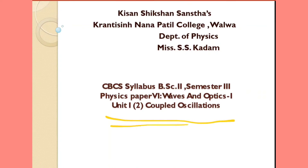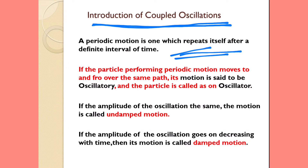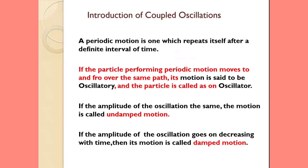Waves and Optics: Coupled Oscillations — Introduction. A periodic motion is one which repeats itself after a definite interval of time. If the particle performing periodic motion moves to and fro over the same path, its motion is said to be oscillatory and the particle is called an oscillator.